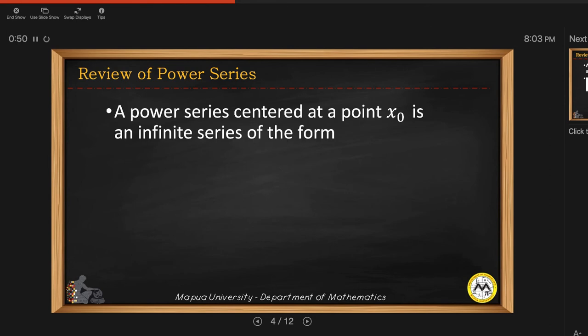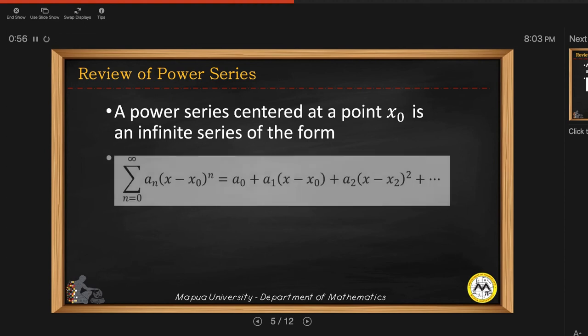So power series centered at the point x sub 0 is an infinite series of the form: sum from n equals 0 to positive infinity of a sub n times x minus x sub 0 raised to the power n. And this is the expanded form.